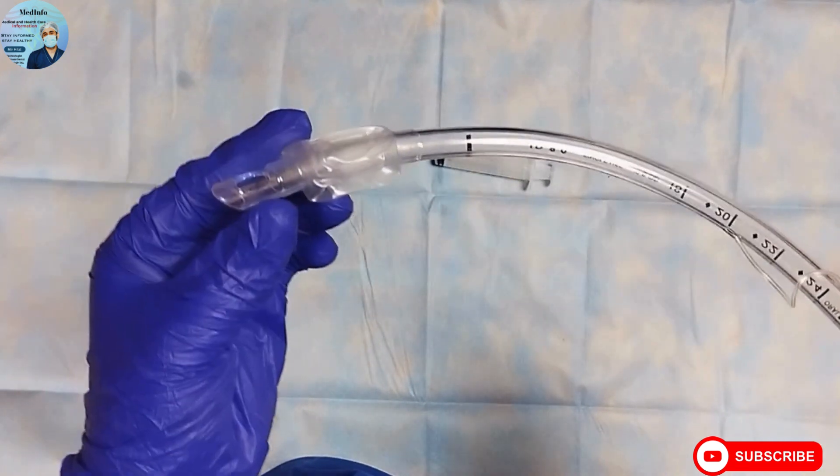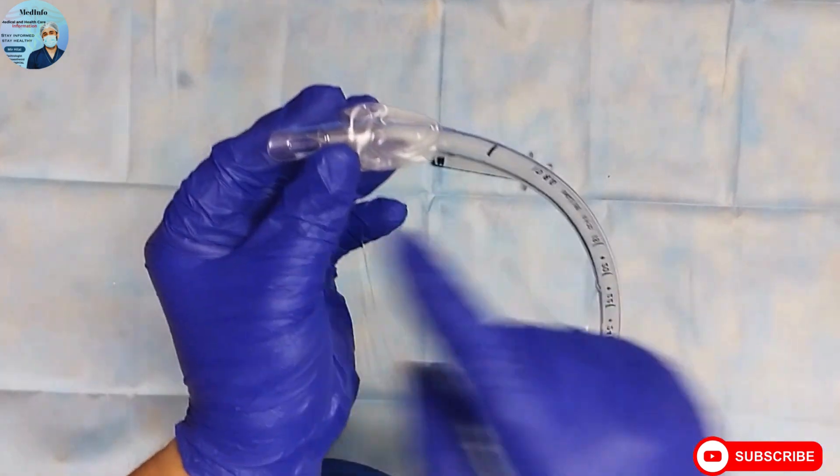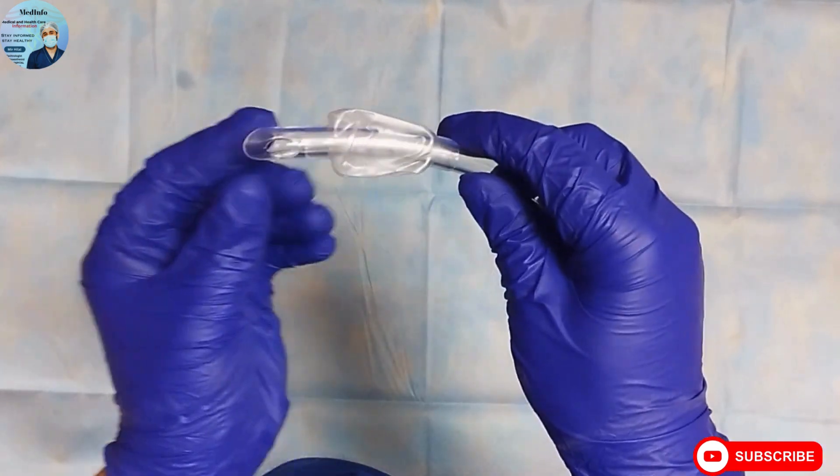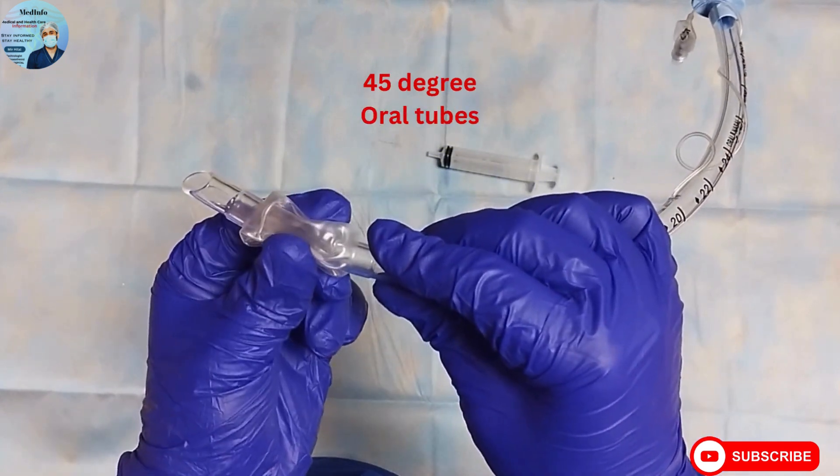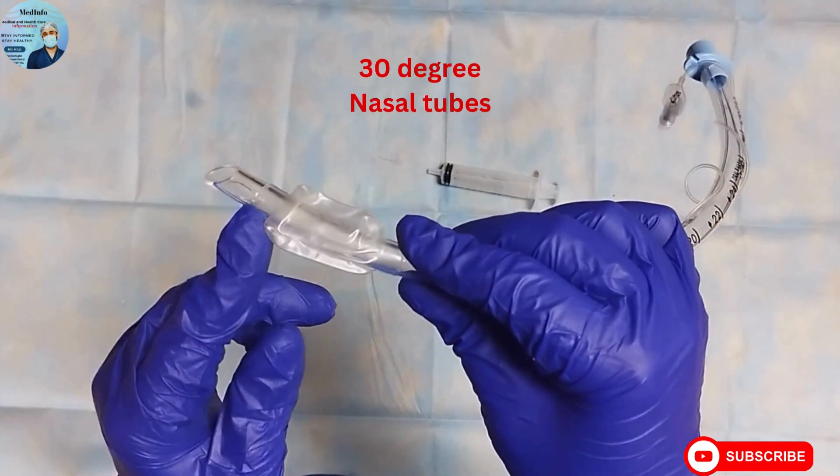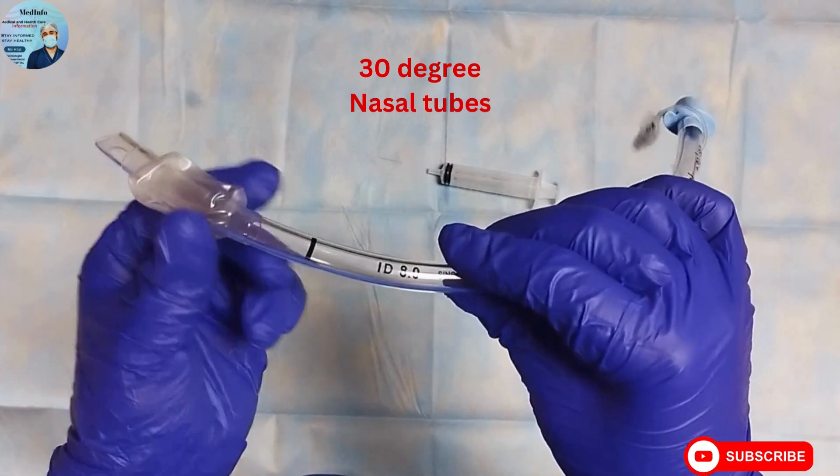This patient end is beveled at 45 degrees in oral tubes and at 30 degrees in nasal tubes. Now, while deciding the length of endotracheal tube, optimal length is the length at which air entry is equal to both sides of the chest.